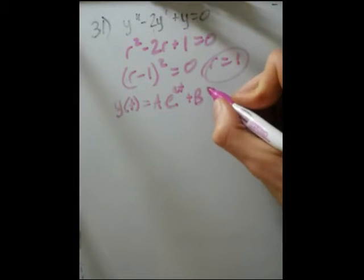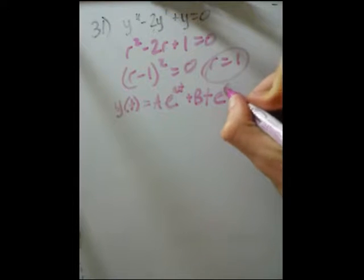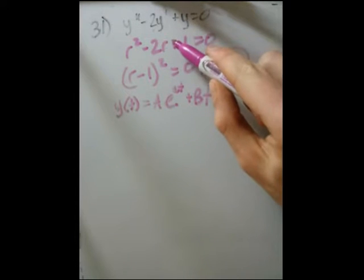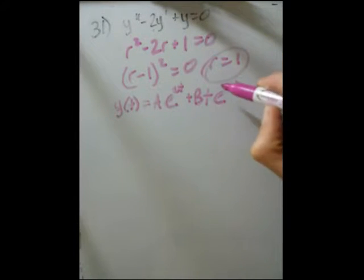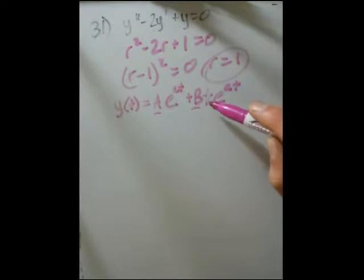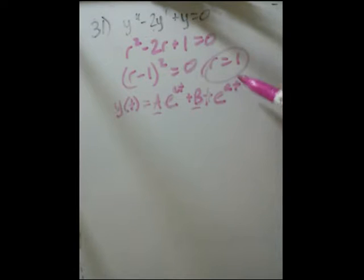So what we do instead is we just stick a t in front, and by the chain rule, that does work. So by adding one power of t, and I believe if you have a third order, for example, you would then add another term with t squared. I think that's what happens after that, but we only have the second-order equations here, so we can take a t in front of it, new constant, and stick that in front.